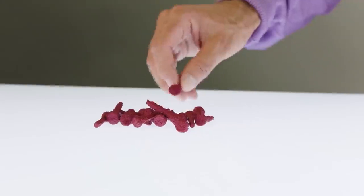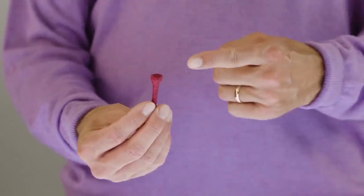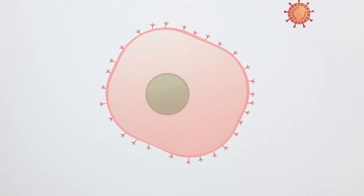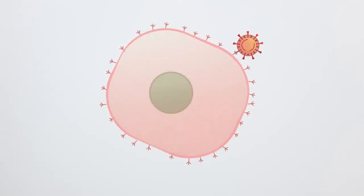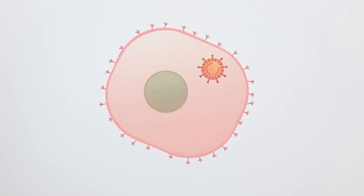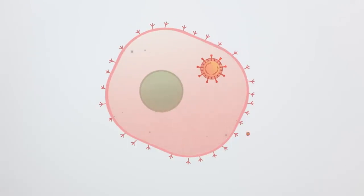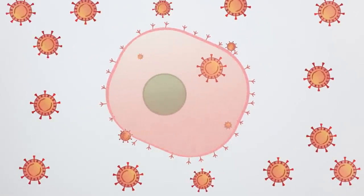This is the coronavirus, and this shape on its outside is called the spike protein. It grabs onto the cells in your body that have a particular receptor and gets that cell to make billions of copies of this virus.